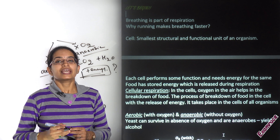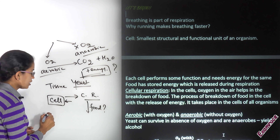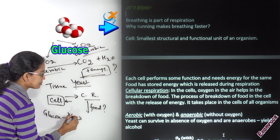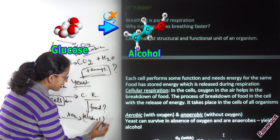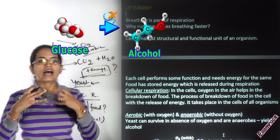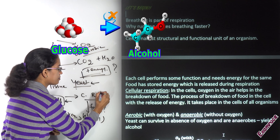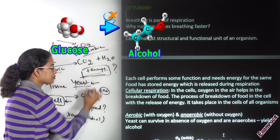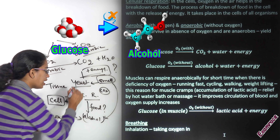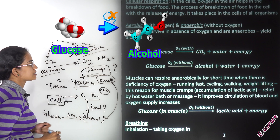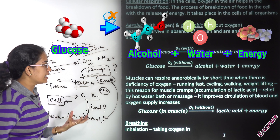A good example of anaerobic respiration is yeast. In yeast, glucose breaks down in the absence of oxygen into alcohol and carbon dioxide. If you have a batter for dosa or any preparation, the dough rises because of the carbon dioxide produced, and it smells because of the alcohol. So yeast demonstrates anaerobic respiration — glucose breaks down into alcohol, water, and energy.